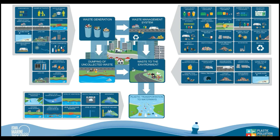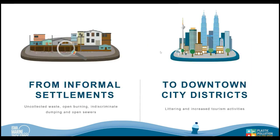We also look at aspects outside of the waste management system — what residents are doing with uncollected waste. Are they burning it or dumping it into local drains or rivers? Once we have waste in the environment, we apply a methodology that takes into account factors such as wind level, how easy an item is to be transported by wind or surface runoff, and local geographical and meteorological factors. We combine these using equations to estimate how much plastic will be transferred to waterways.